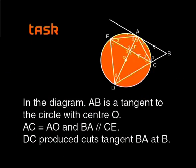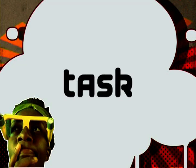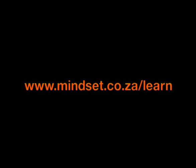In the diagram, AB is a tangent to the circle with center O. AC equals AO and BA is parallel to CE. DC produced cuts tangent BA at B. Please check our website to get the information needed for the task and other print related information.